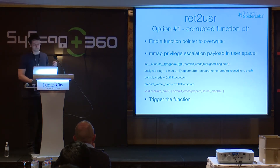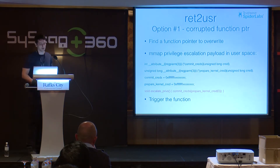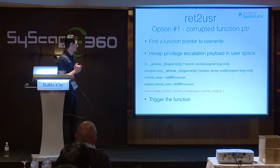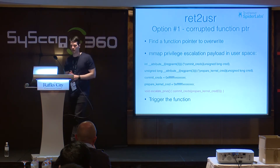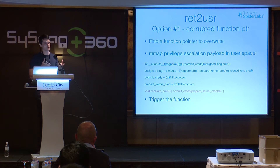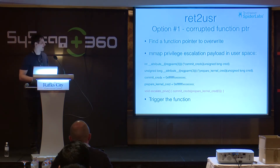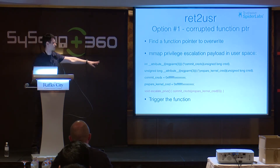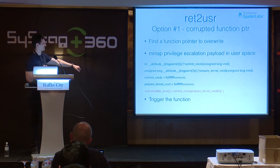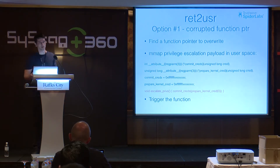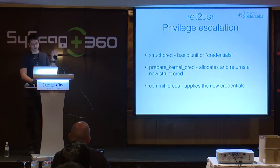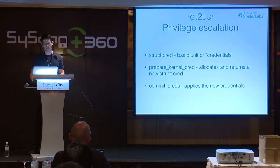Option one: corrupt a function pointer. You find a function pointer to overwrite, then map your privilege escalation payload in user space. The typical payload uses two functions: prepare_kernel_cred and commit_creds. prepare_kernel_cred creates a new credential structure with UID zero, and commit_creds applies it to the current process — you become root. So escalate_privs calls prepare_kernel_cred(0) to create a null credential structure with UID zero, then applies it with commit_creds, and you trigger the vulnerable function to execute the payload.